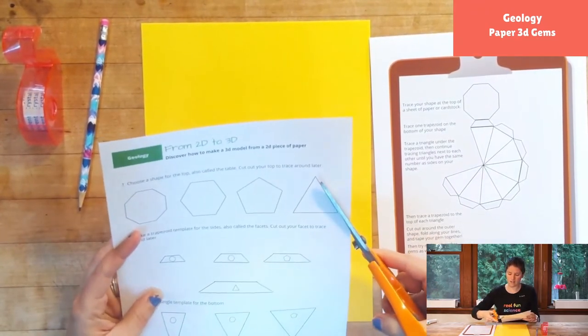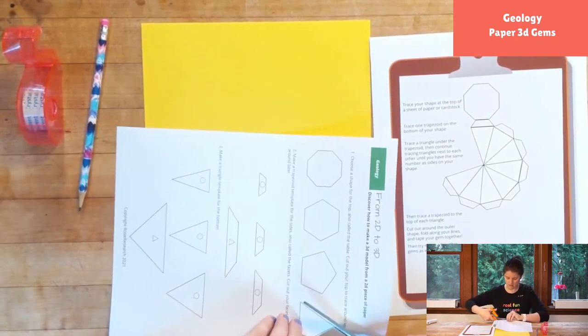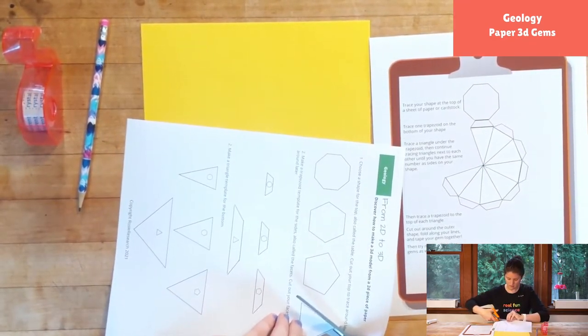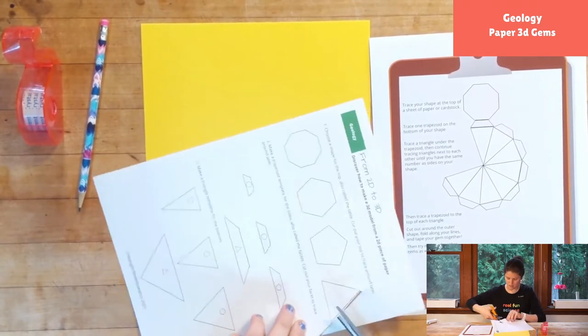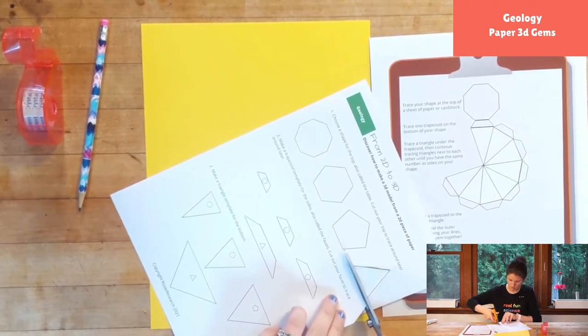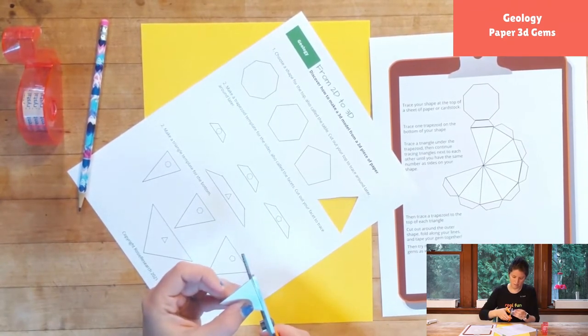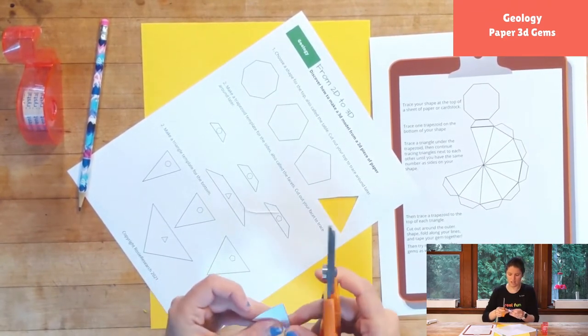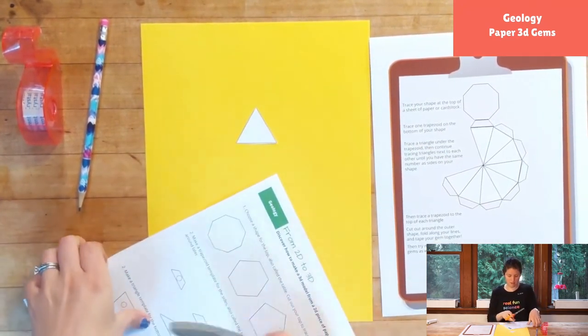So the first thing you're going to do is you're going to cut out your triangle with your scissors. The better we cut it, the better our projects will come out. But I always strive for good enough and not necessarily perfect. Perfection is a hard thing to reach, especially when you're a kid. So that's going to be the first part.